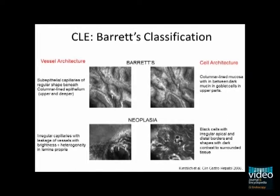In contrast, Barrett's neoplasias show irregular capillaries with leakage of vessels with brightness and heterogeneity in the lamina propria. The cellular architecture in neoplasias show black cells with irregular apical and distal borders and shapes with dark contrast.